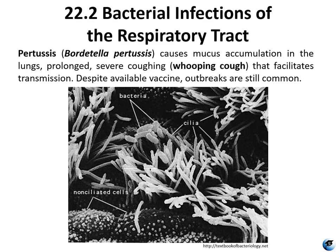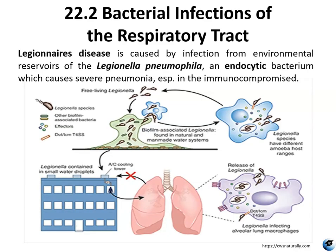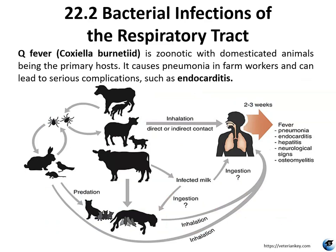There is a vaccine for whooping cough, but outbreaks are still common, especially in very young children or the elderly. Legionnaires' disease is caused by Legionella pneumophila, an endocytic bacterium causing very severe pneumonia, especially in immunocompromised patients. It is also a biofilm-forming bacteria, which increases its virulence. Many of these pneumonias are caused by capsule-forming bacteria, which aids in adherence and prevents physical removal from the lungs, causing a persistent cough. Q fever is a zoonotic disease usually transferred from domesticated animals to humans, common in farm workers, and can lead to endocarditis.